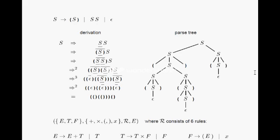Next we will discuss derivation and parse strings. These are not new concepts — in our previous class we already proved some CFG rules using a step-by-step replacement technique, which is called derivation. For example, to generate a particular string using these rules, we first apply s → s s, then the left s is replaced by (s) and the right s remains. Again that s is replaced by s s, and so on, until we arrive at the final result string.